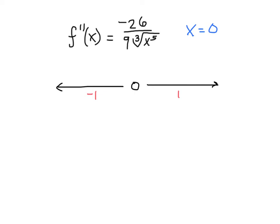Once we determine the sign of our second derivative when we plug one in, we will know the signs of the second derivative for all the numbers on the positive side. And similarly, when we plug negative one in, we determine the sign of the second derivative. We'll know the signs of all the values that are negative.